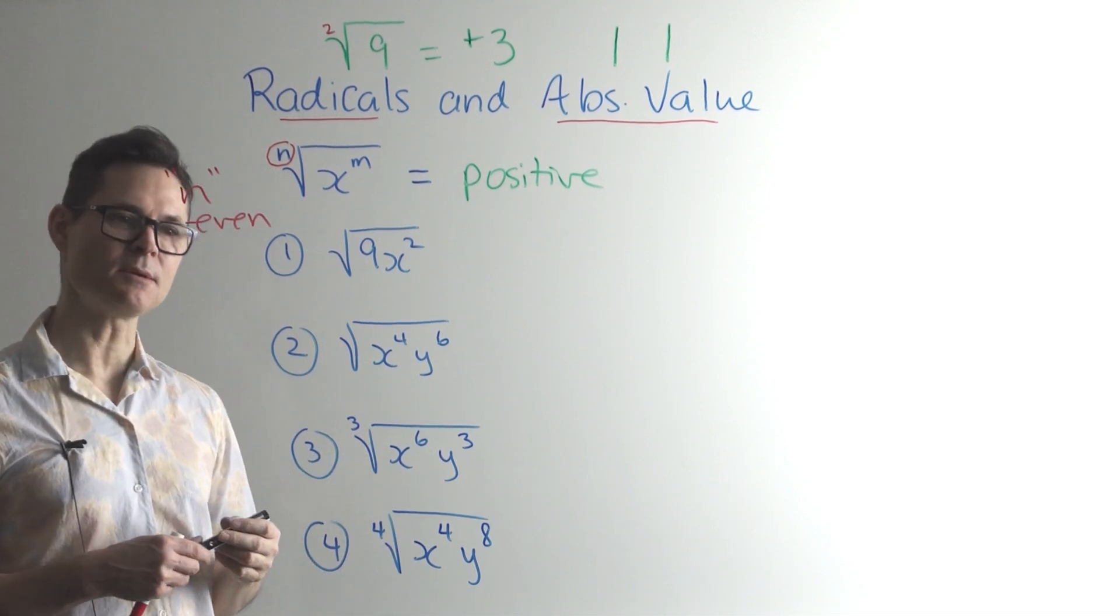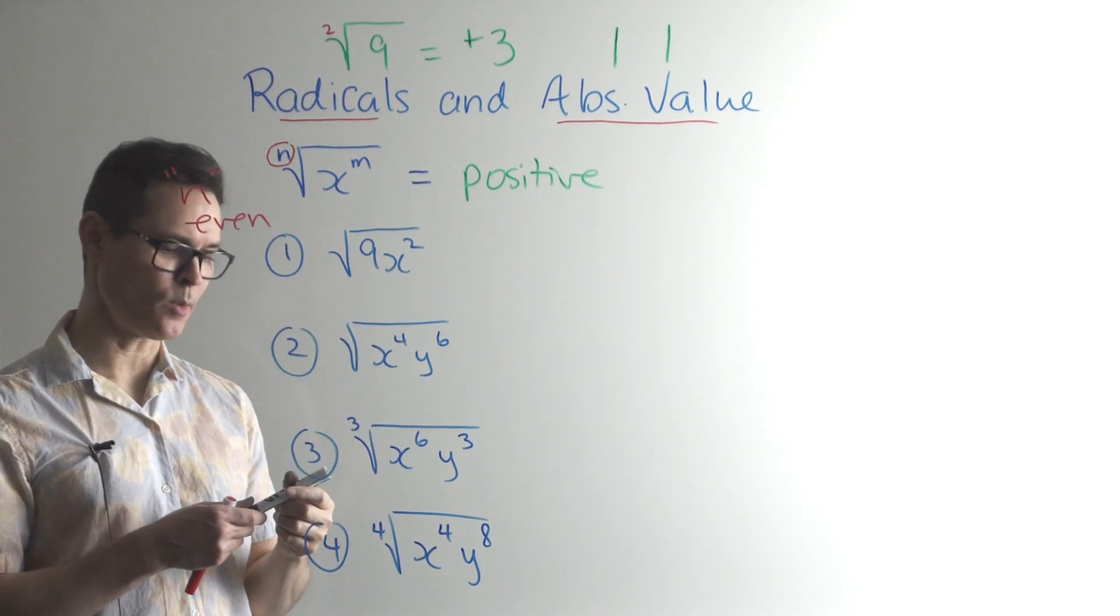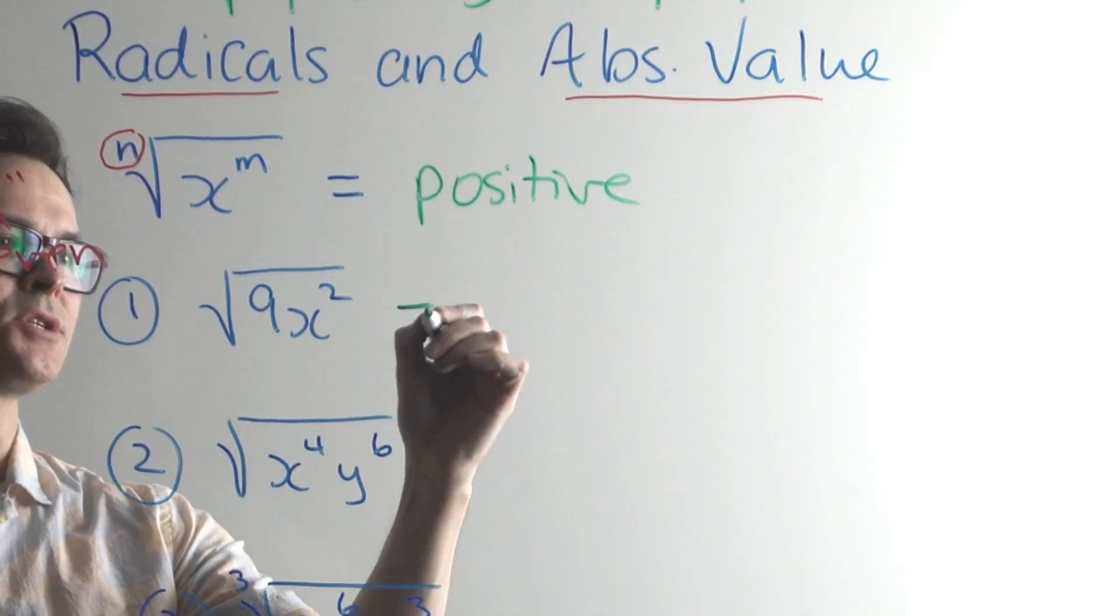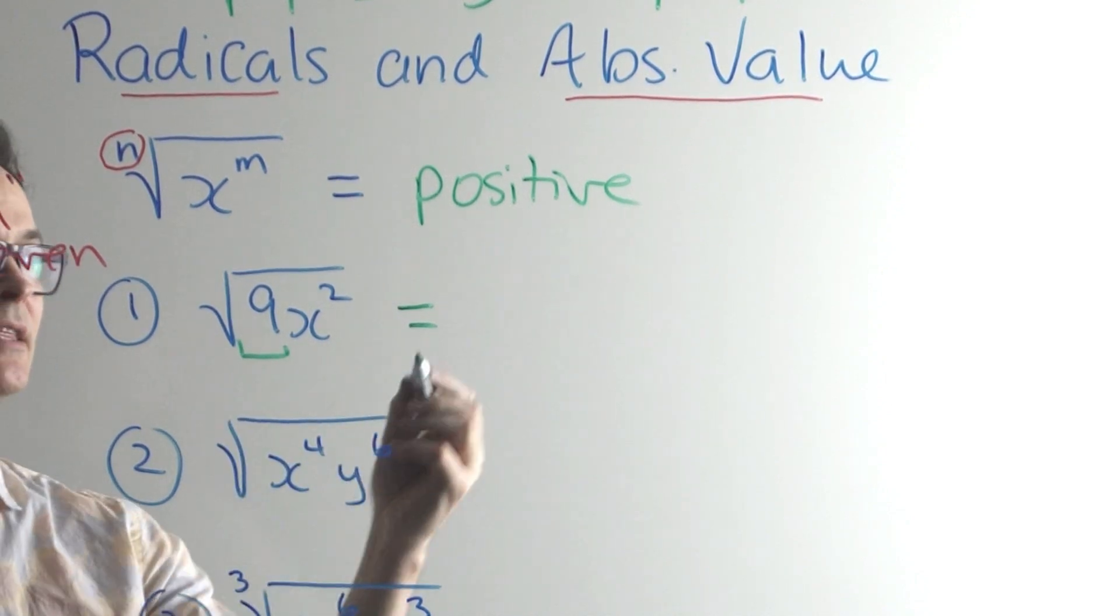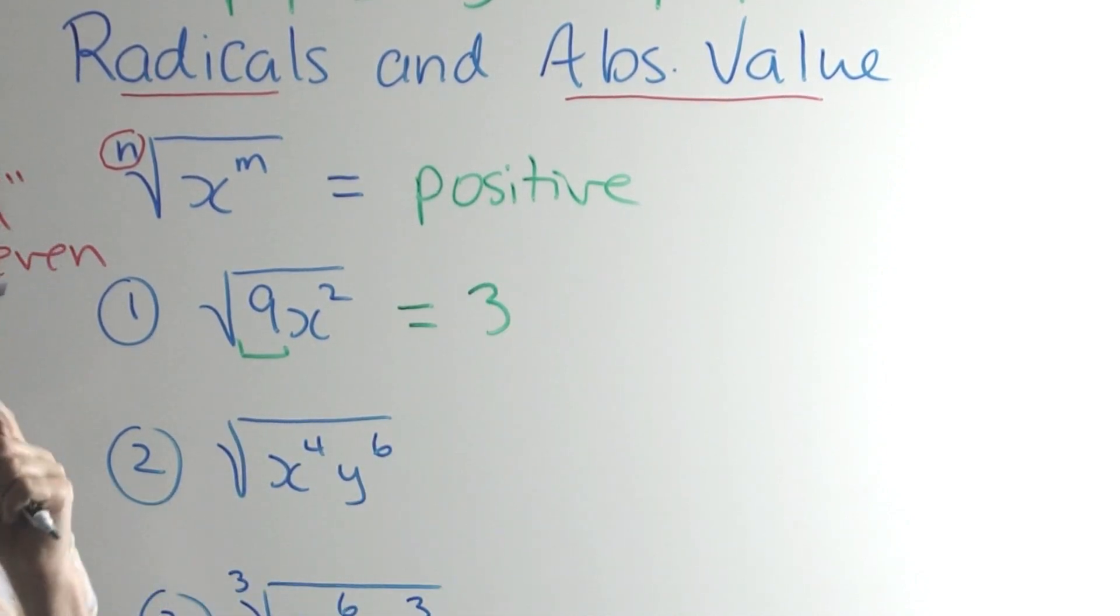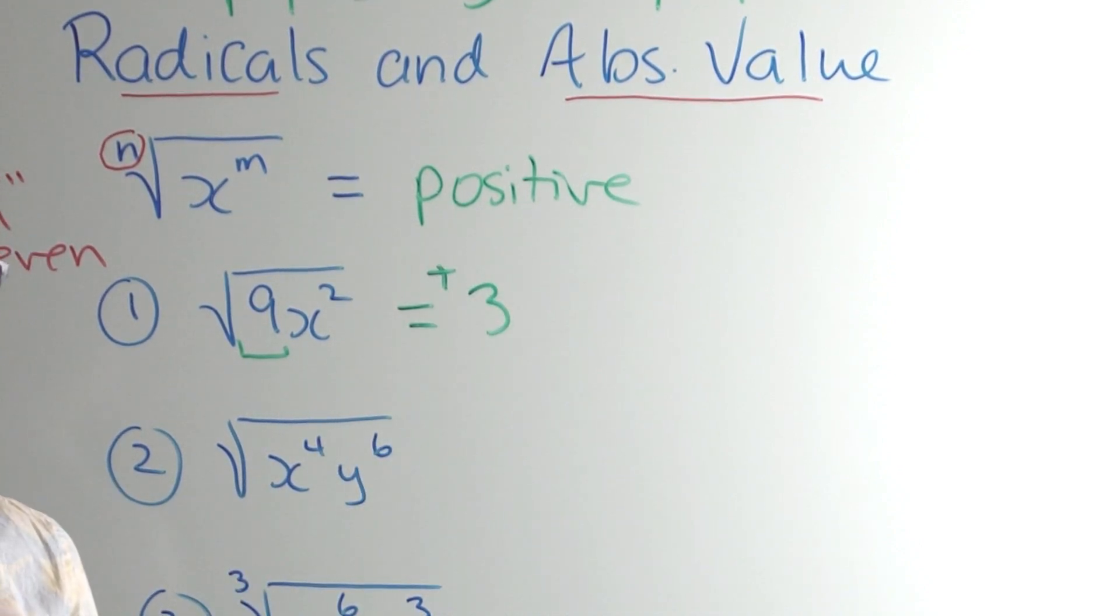Now, here's the square root of 9x squared. So when we do this, most of you are going to know that you go through and you say, what's the square root of 9? And you say the answer is 3. Not negative 3. Because we have to ensure that the answer is positive.